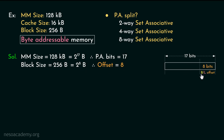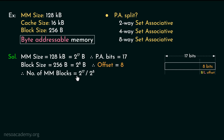Therefore from the 17-bit physical address, the 8 least significant bits will be used for block or line offset. Now let's find out the number of blocks inside the main memory. The blocks inside the main memory is going to be 2 to the power 9, because dividing the main memory size by the block size we obtain the number of blocks. So 9 bits are going to be used for the block number portion.